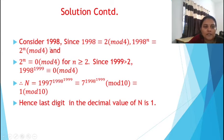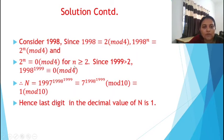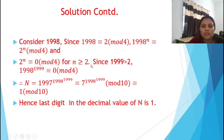Now we have to consider 1998. Since 1998 is congruent to 2 mod 4, we have 1998 raised to n congruent to 2 raised to n mod 4. And 2 raised to n is congruent to 0 mod 4 when n is greater than or equal to 2, since 2 squared and higher powers of 2 are multiples of 4. Since 1999 is greater than 2, 1998 raised to 1999 is congruent to 0 mod 4.